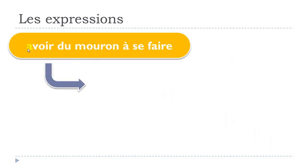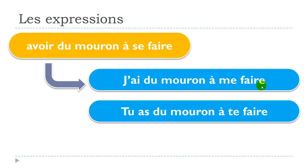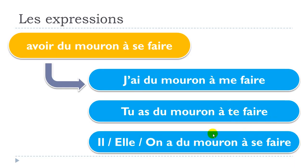The expression is avoir du mouron à se faire. We will have to change the SE part according to the subject. For the first person: j'ai du mouron à me faire. For the second person: tu as du mouron à te faire. And for the third person plural: ils/elles ont du mouron à se faire.